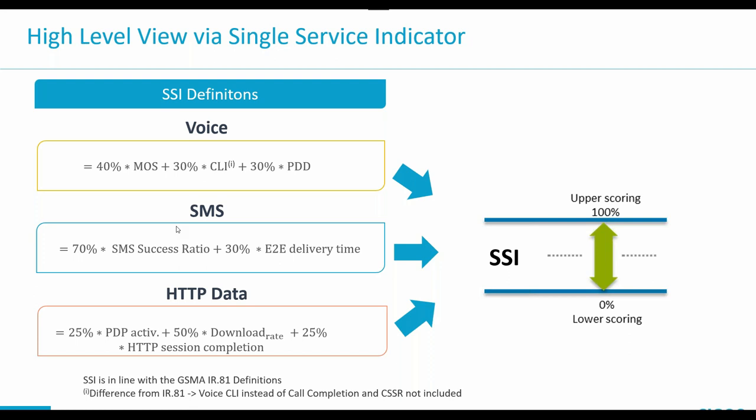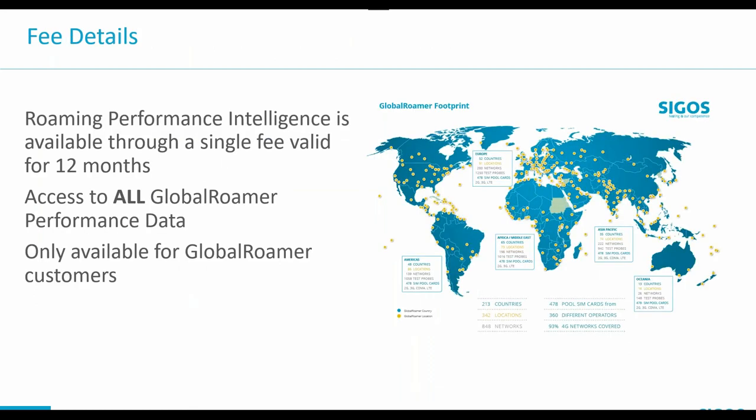For data, we take the PDP context activation duration and the session completion — we want to make sure the data session is successfully completed — but most importantly, the download rate, as that is what really matters and impacts the user experience. How can you get this product? It is a 12-month subscription with a single fee. You have access to all Global Roamer performance data during the year. It is available only to Global Roamer customers, because your data also have to be generated on the Global Roamer in order to have the dashboard and charts for benchmarking.